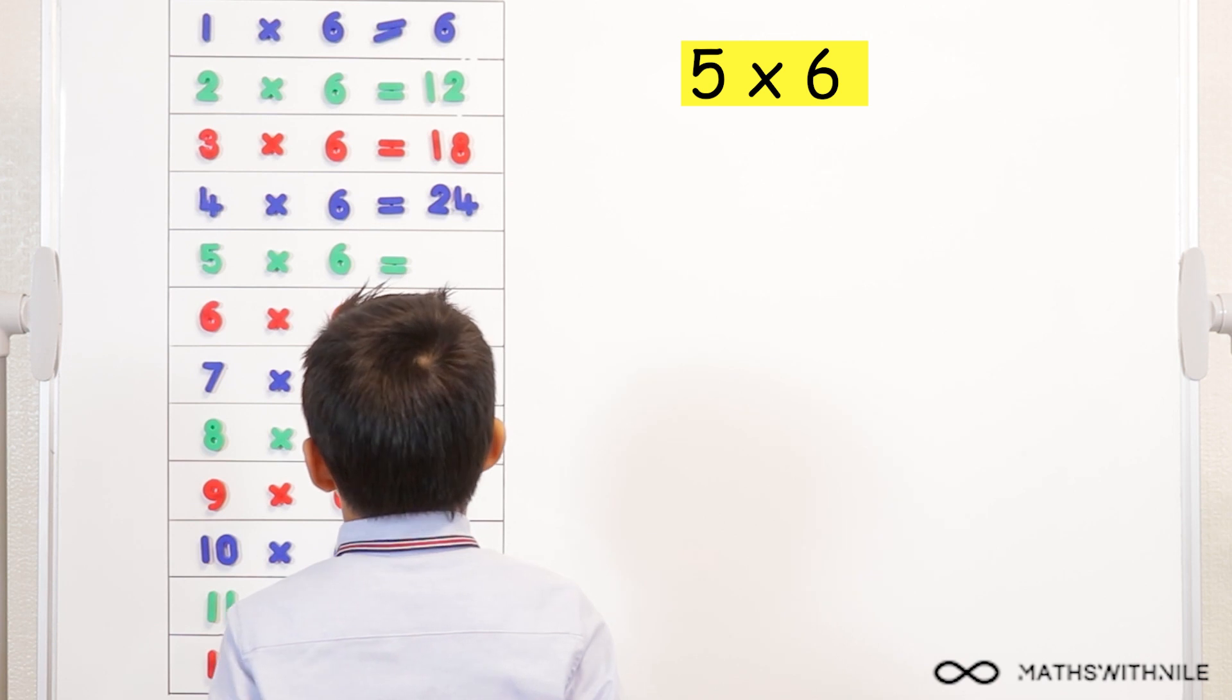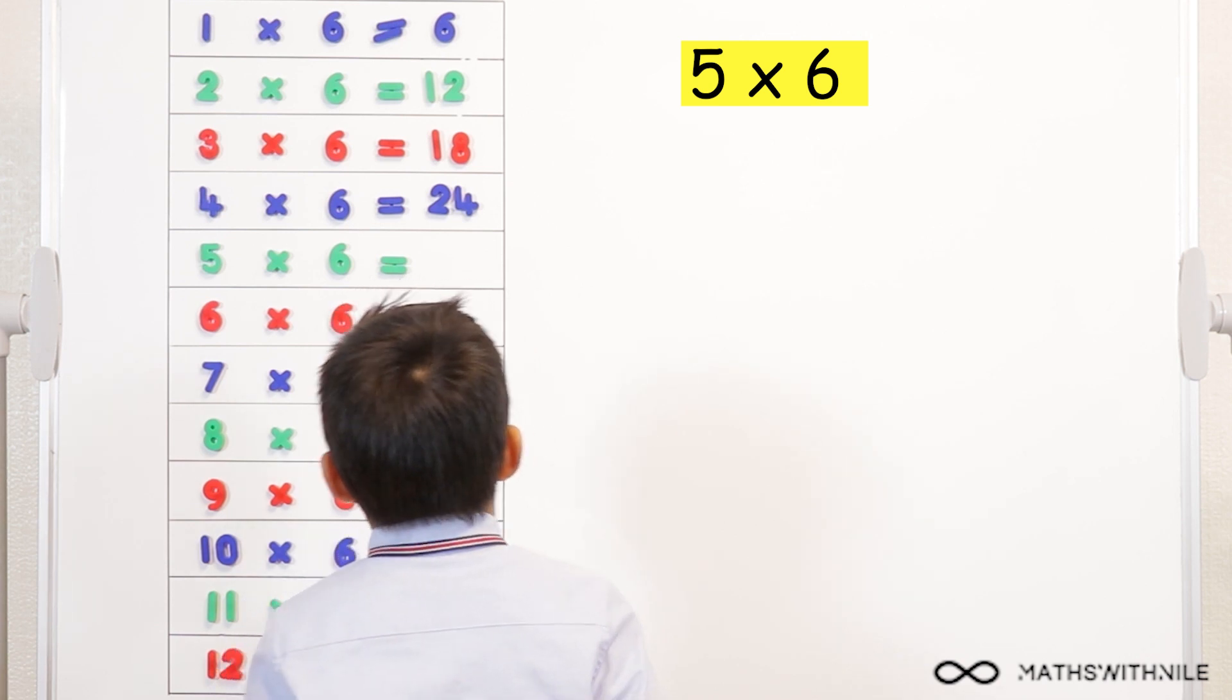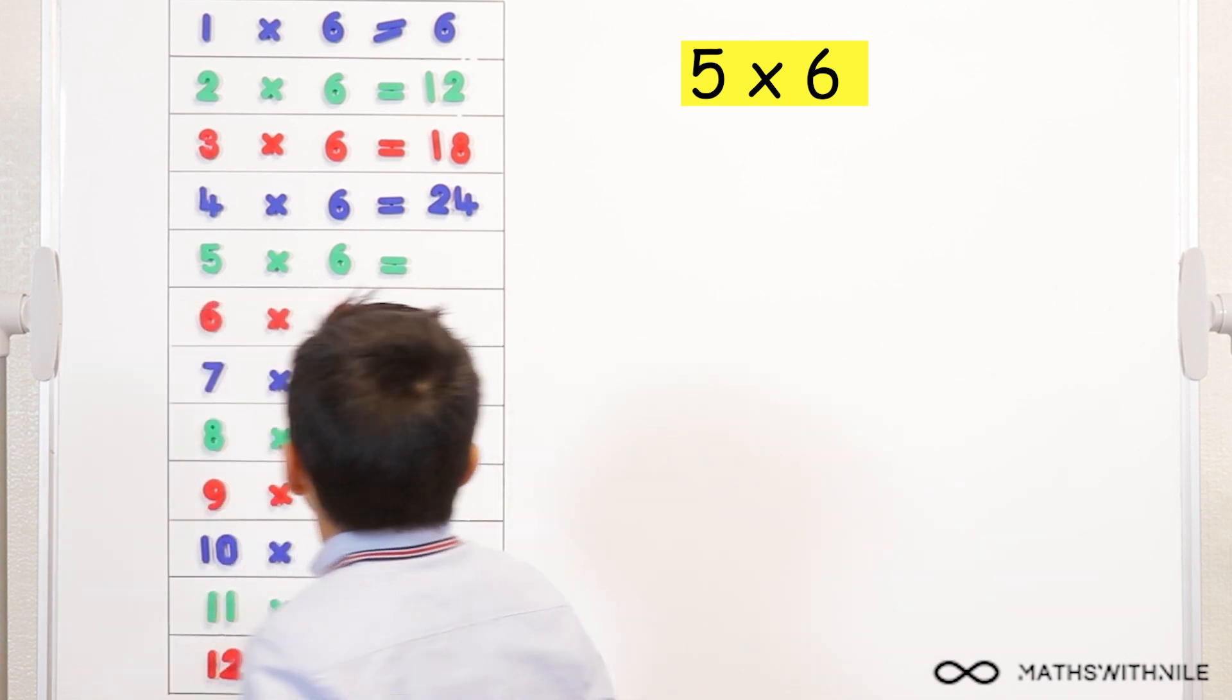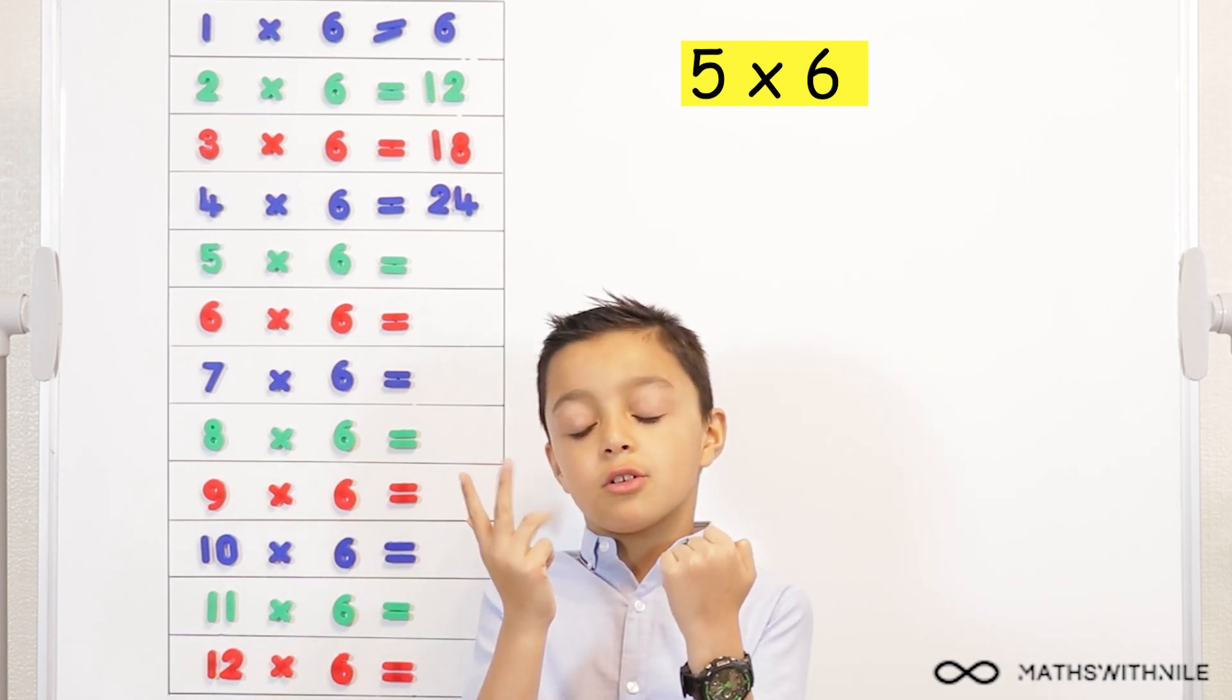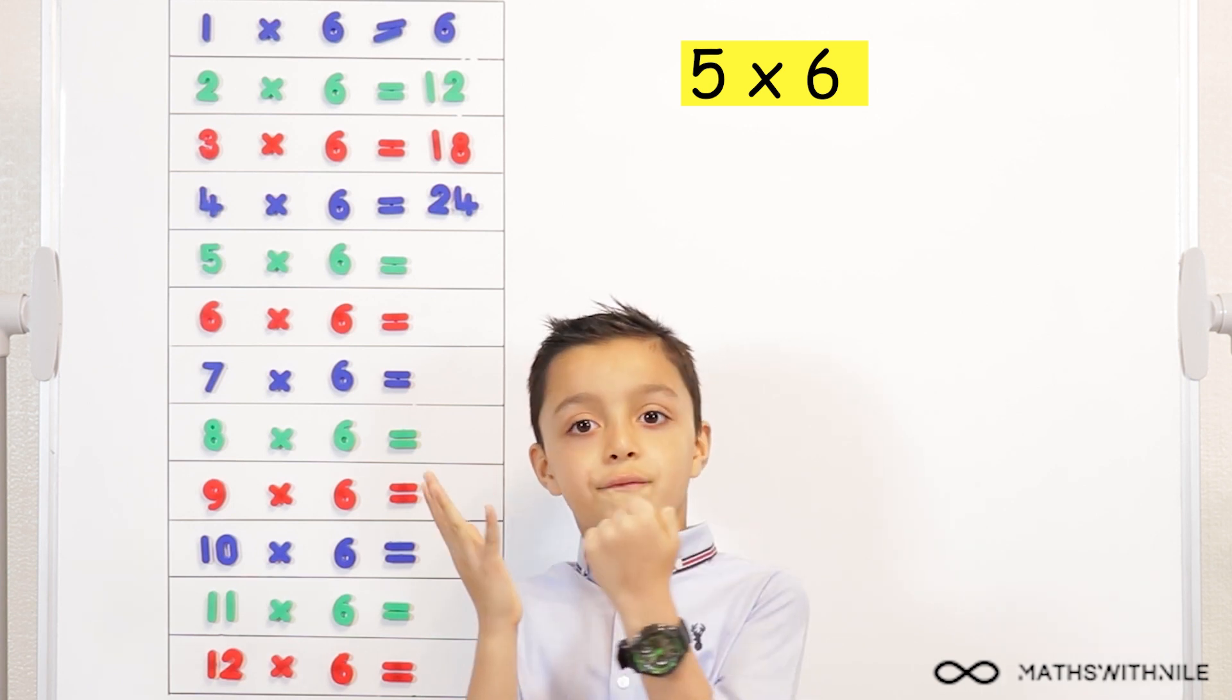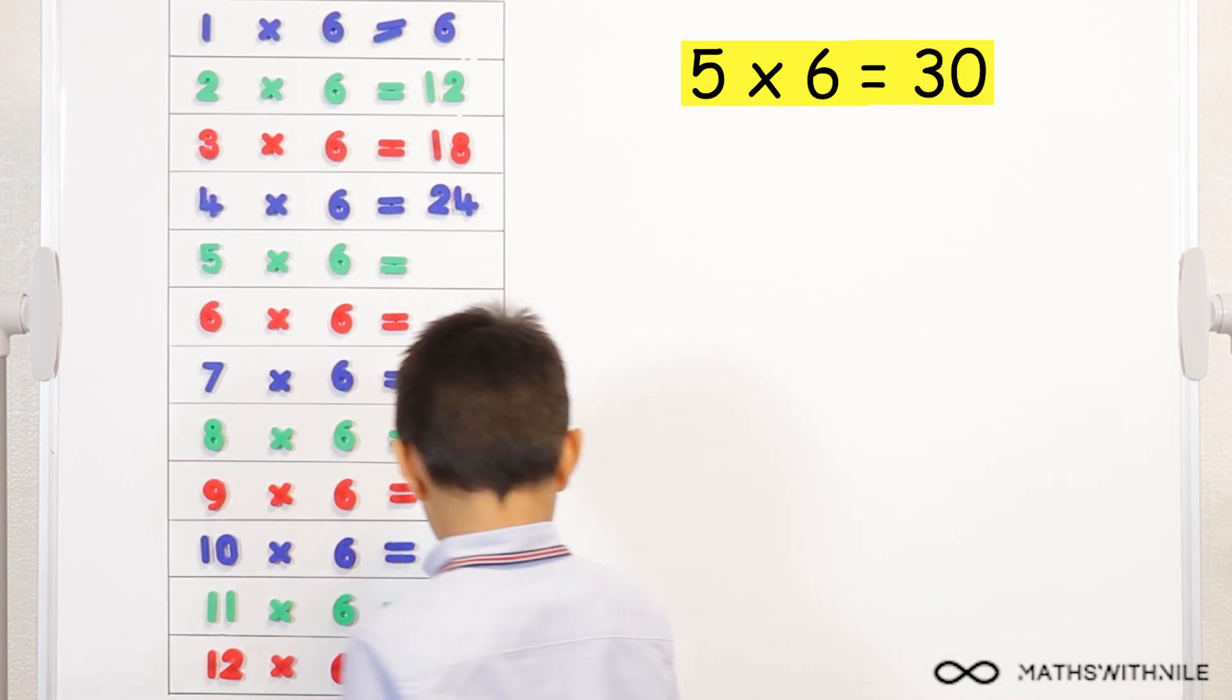Five times six. Twenty-four, twenty-five, twenty-six, twenty-seven, twenty-eight, twenty-nine, thirty. Good job.